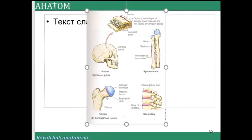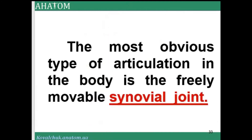In a primary cartilaginous joint, articular cartilage must be present. The most common type of articulation in the body is the freely movable synovial joint.